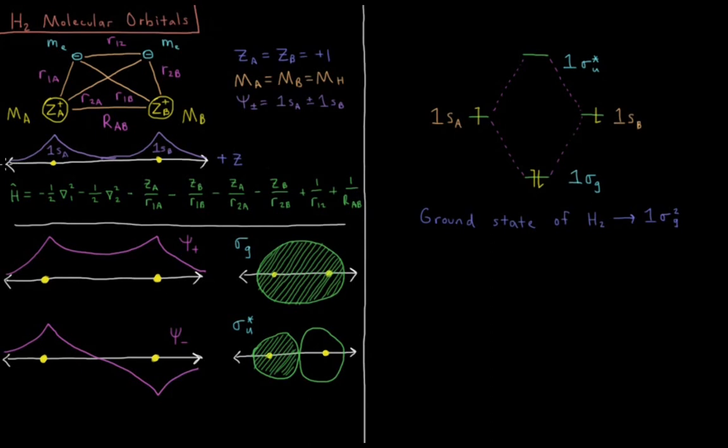Our trial wave function was a linear combination of 1s orbitals placed at each nucleus, 1sa and 1sb. So we determined in the previous video that there are two states or two molecular orbitals equal to the positive and negative linear combination of these two orbitals times the normalization constant, which I'm not going to worry about right now. So psi plus minus equals 1sa plus or minus 1sb.